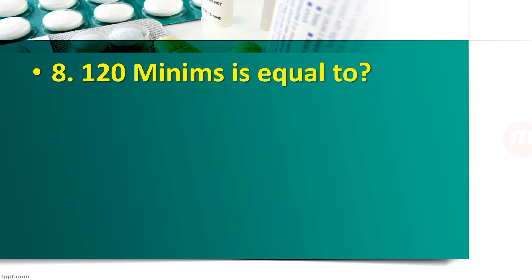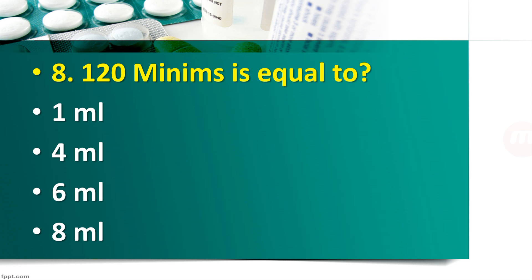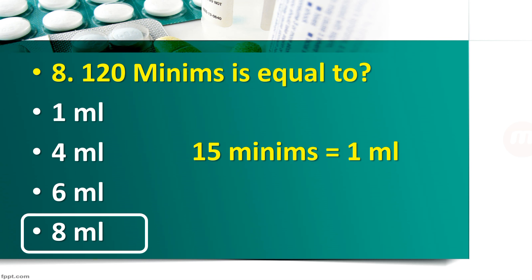Question number 8: 120 minims is equal to — 1 ml, 4 ml, 6 ml, or 8 ml? The right answer is 8 ml. Because 15 minims is equal to 1 ml, so 120 minims is equal to around 8 ml. 15 into 8 is equal to 120.